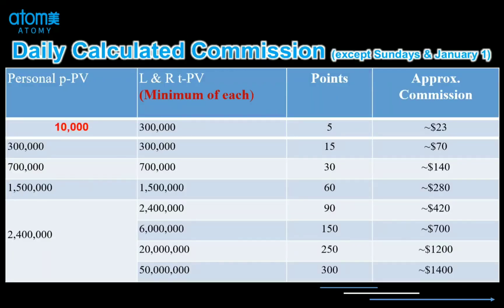The PVs are calculated daily, except Sunday and January 1st. Remember to buy something into your account once you join, because some members after they joined, for a long period of time, didn't buy anything. At the end, they find out that all the members underneath them — whatever products they purchased — they did not get any team PV, because they don't have any PV under their own account. So remember to buy something once you join, so that you can collect the PV of the members under you as your team PV.